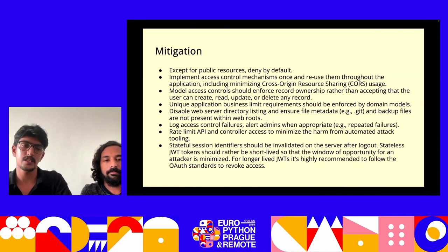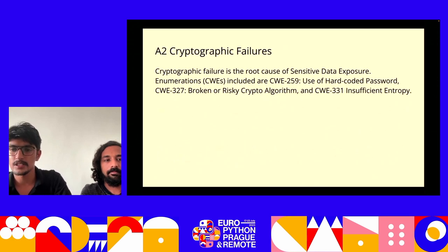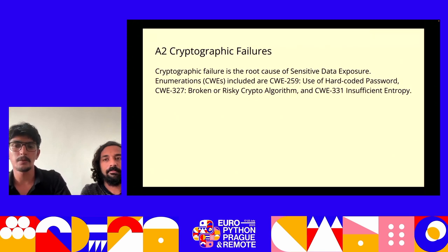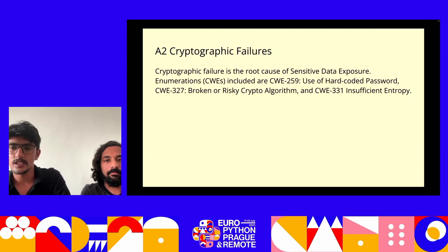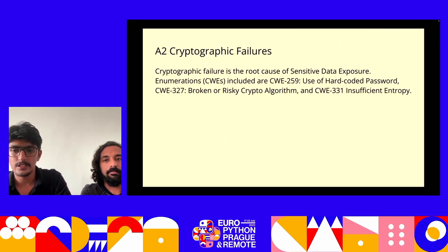The second vulnerability is cryptographic failures. The first concern is ensuring the protection of data while in transit or at rest. Data such as passwords, personal information, healthcare data, and credit card details require additional protection and must be encrypted from unauthorized users. Common cryptographic failures occur when data is transmitted as plain text, when outdated or weak cryptographic algorithms are used, when server certificates and trust chains are not properly validated, or when default crypto keys are used.